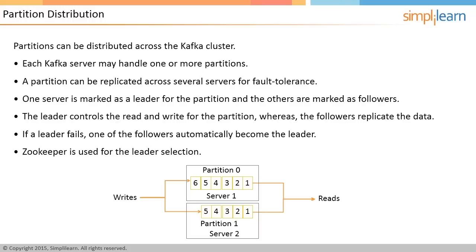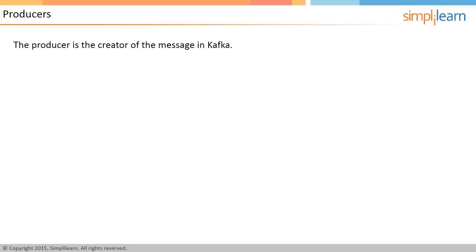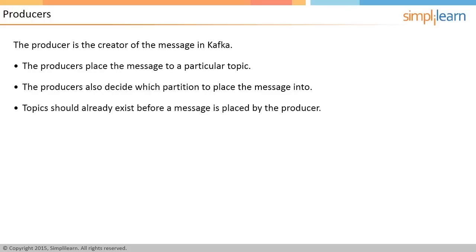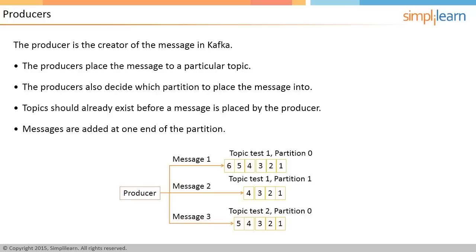The producer is the creator of the message in Kafka. Producers place the message to a particular topic and decide what partition to place the message into. For example, a producer may place a message into partition zero of topic simple, or another producer may place a message into partition one of topic simple. Topics should already exist before a message is placed by the producer. The image illustrates a producer creating three messages: message one is sent to partition zero of topic test one, message two to partition one of topic test one, and message three to partition zero of topic test two.